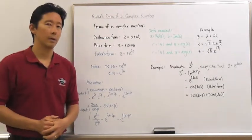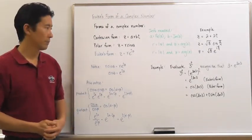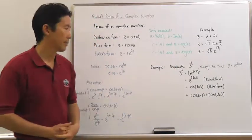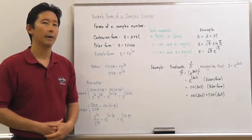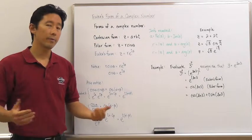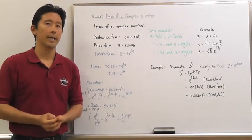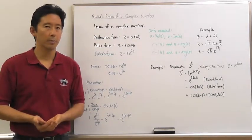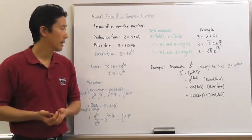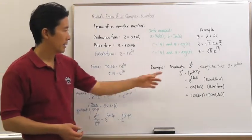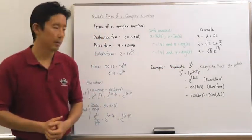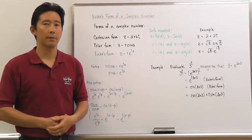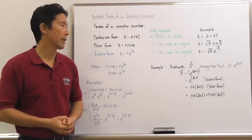What's the merit of Euler's form? Well, if we wanted to evaluate something like 3 to the i, we've never really come across that kind of situation before, because usually when we deal with exponentials the exponent is always a real number. But in this case it's an imaginary number, so how do we deal with that?